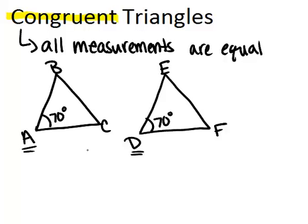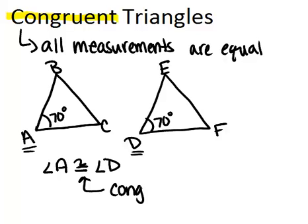So we can say their measurements are equal, the actual angles themselves are congruent. And the way that we notate that is with the congruent symbol. So we would say angle A is congruent to angle D, and this is the symbol for congruent. It looks like an equal sign except it has a squiggle on top of it.